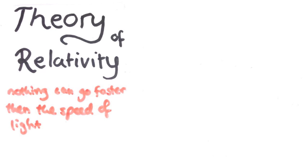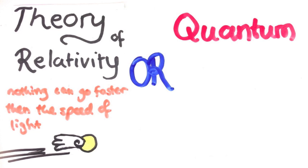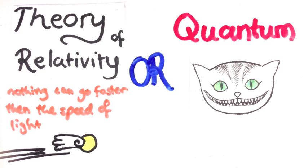Either we must believe that nothing can go faster than the speed of light, and accept that quantum mechanics is completely false. Or we accept quantum mechanics, but we discard the theory of relativity. We can't have both.